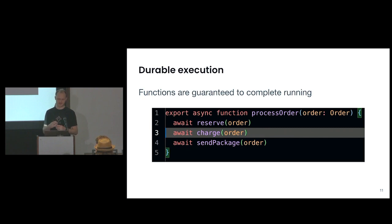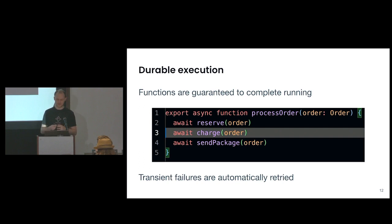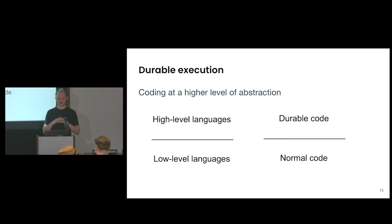Another thing that durable functions do is automatically retry any transient failures — for instance, talking to a database that's temporarily unavailable due to the network or the database being down, or a downstream service, or a third-party API. If there's a transient retriable failure, it will automatically be retried. So durable execution is coding at a higher level of abstraction, kind of like in a high-level language like Java or JavaScript you don't have to manage memory. With durable code, you don't have to care about faults in the infrastructure running your code, or transient faults in any of your dependencies.